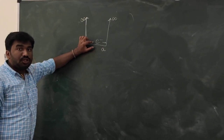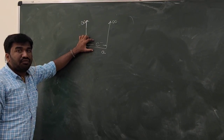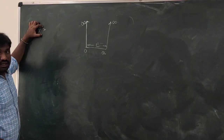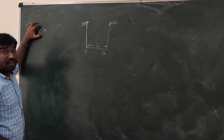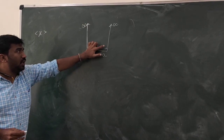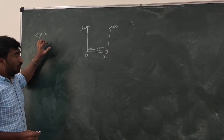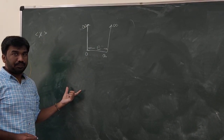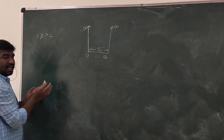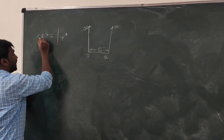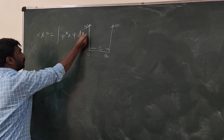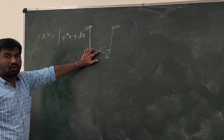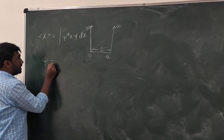To calculate the position of this electron, we first calculate the expectation value of x. The expectation value of x represents the average value of position of this particle when the particle is in a one dimensional box. That means the probability of getting the electron at that position is more.